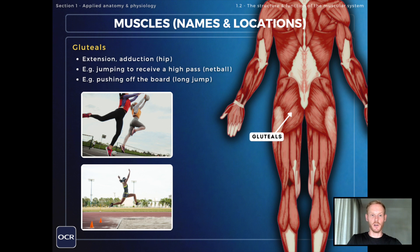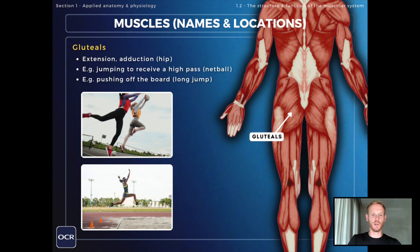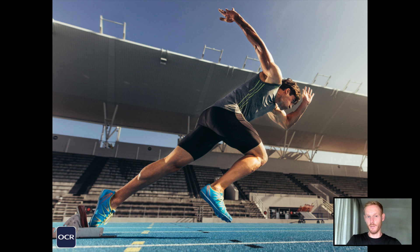Just above the hamstrings we have the gluteals. The main role of the gluteals is to create extension at the hip joint, which is pulling the leg downwards and backwards. Good examples include jumping to receive a high pass in netball, which involves extension or straightening at the hip joint, pushing off the board in long jump, and driving out of the starting blocks when sprinting.